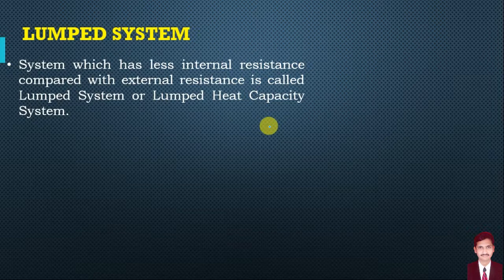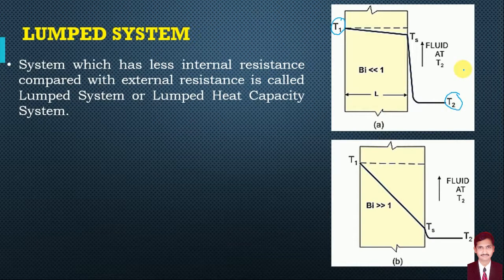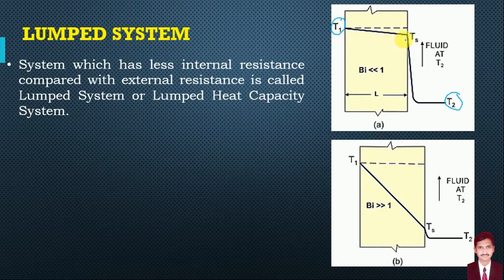You should be able to understand what is meant by internal resistance and external resistance. I have shown two figures here. In the first figure, T1 is a higher temperature whereas T2 is the atmospheric temperature. Heat is flowing from T1 to T2. As heat flows from T1 to T2, there are many resistances in between. The first resistance is provided by the wall — the yellow colored wall — and the second resistance is provided by the fluid, which here is air.